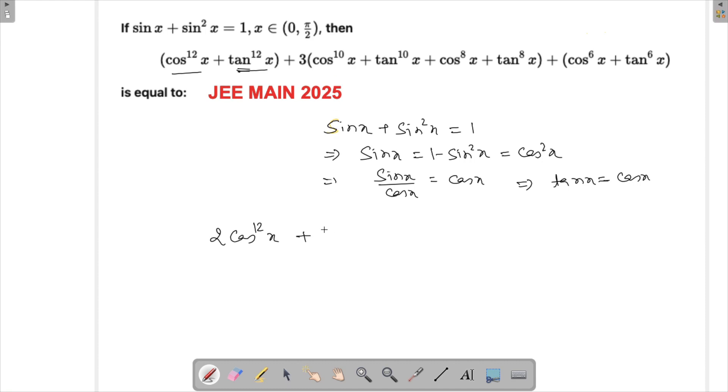Similarly here, this three times cos raised to the power tan x and tan raised to the power 10x will become 2 times cos raised to the power 10x, plus this will be 2 times cos raised to the power 8x, and then this will become 2 times cos raised to the power 6x.